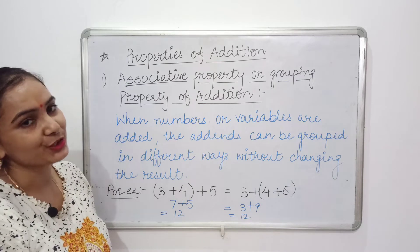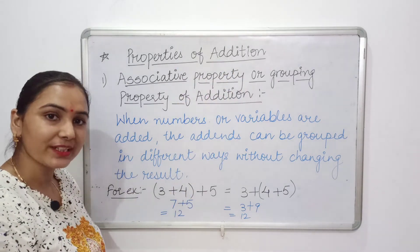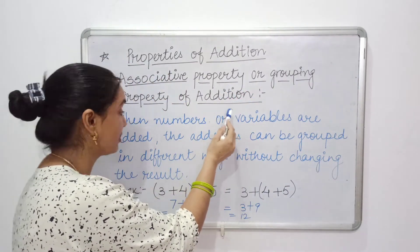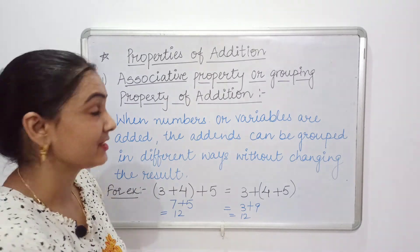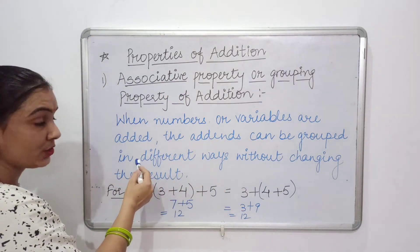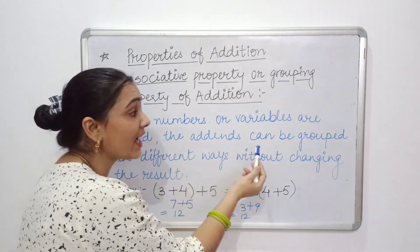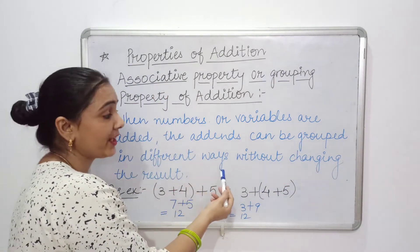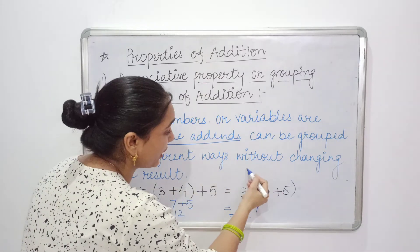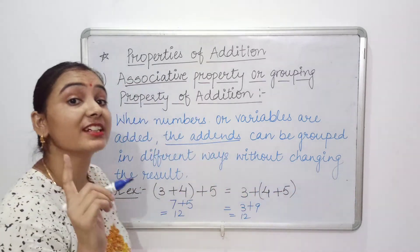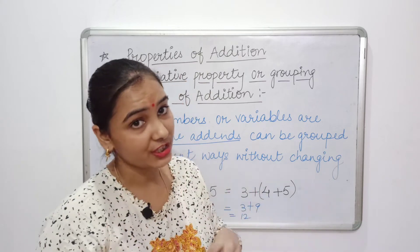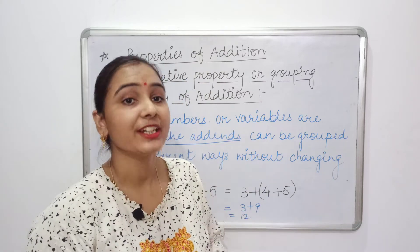So let's discuss the properties of addition. The first property is the associative property, or grouping property of addition. In this property, it is explained that when numbers or variables are added, the addends can be grouped in different ways without changing the result. The result cannot be changed, no matter how the addends are grouped.